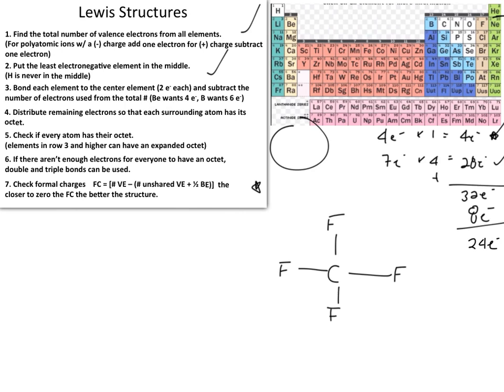To figure out where to distribute the remaining electrons, we look at step number four: distribute the remaining electrons so that each surrounding atom has its octet. Fluorine, which is number nine on the periodic table, wants a total of eight valence electrons.